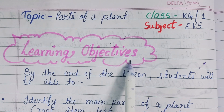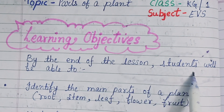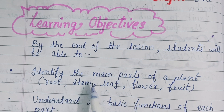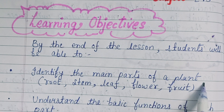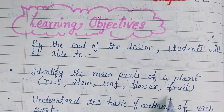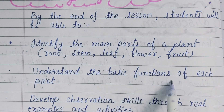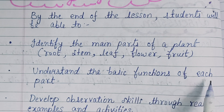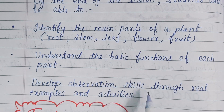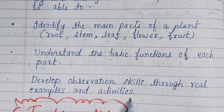Learning objectives: By the end of the lesson, students will be able to identify the main parts of a plant — root, stem, leaf, flower, fruit — understand the basic function of each part, and develop observation skills through real examples and activities.